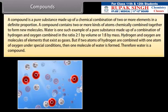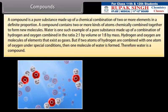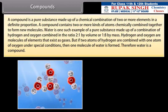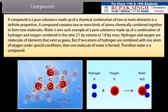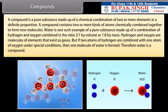A compound is a pure substance made up of a chemical combination of two or more elements in a definite proportion. A compound contains two or more kinds of atoms chemically combined together to form new molecules. Water is one such example of a pure substance made up of a combination of hydrogen and oxygen combined in the ratio of 2 to 1 by volume and 1 to 8 by mass. If two atoms of hydrogen are combined with one atom of oxygen under special conditions, then one molecule of water is formed. Therefore, water is a compound.